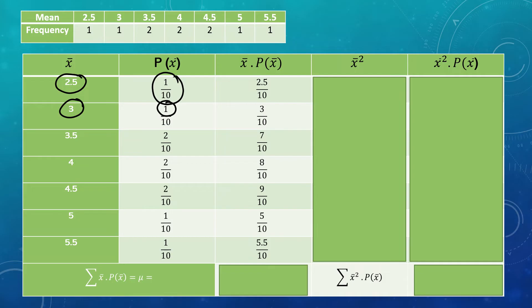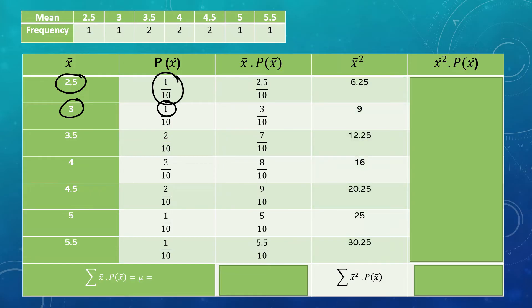Next, we find the x̄² column by multiplying x̄ by itself. So 2.5² = 6.25, 3² = 9, 3.5² = 12.25, 4² = 16, 4.5² = 20.25, 5² = 25, and 5.5² = 30.25.